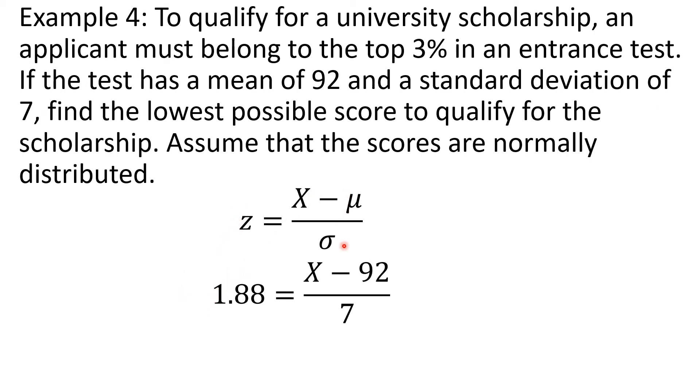z is 1.88, mean is 92, and standard deviation is 7. By using some properties of equality, MPE and APE, we multiply both sides by 7, so that this will be eliminated, this denominator 7. The denominator 7 times numerator 7, so that's equal to 1. And on this side, 1.88 times 7. After that, we add positive 92 to both sides because that is the additive inverse of negative 92. So this will become 0. So the other next to x will be 0, and you'll be able to find the value of x. Here, we also have plus 92. By performing those two operations, we'll get the value of x. x is equal to 105.16. That is the lowest possible score for you to qualify for the scholarship.